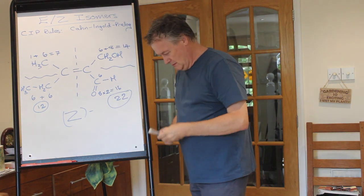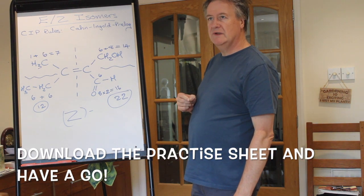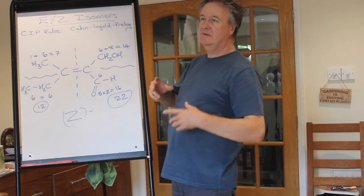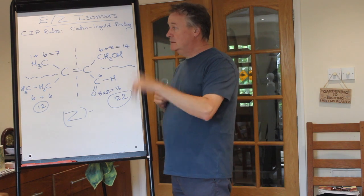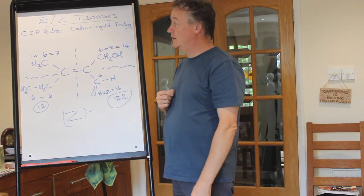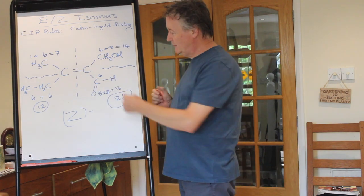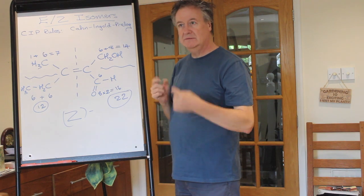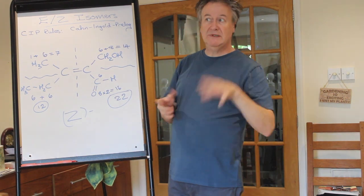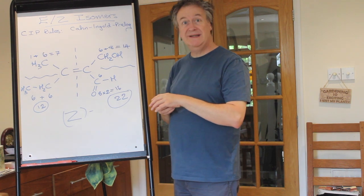There'll be an attached sheet with some things to practise on - whether they are E or Z. We won't go as far as naming the full compound as that's a different video. You don't need to remember the name 'CIP' - you just need to know how to do it and get an E or Z correctly. That's probably as complex as you'll ever see at A-level. It obviously goes a lot further post A-level, but there we are. Thank you for watching - see you in the next video.